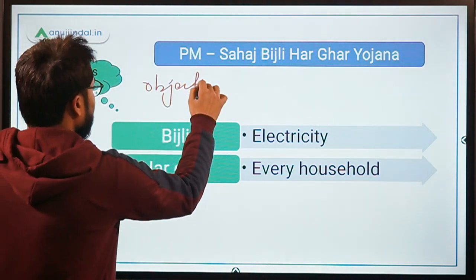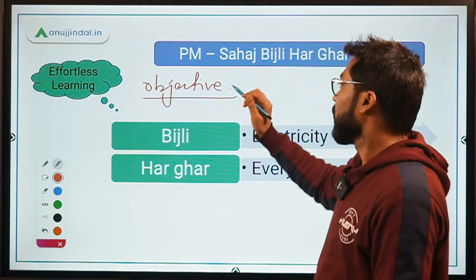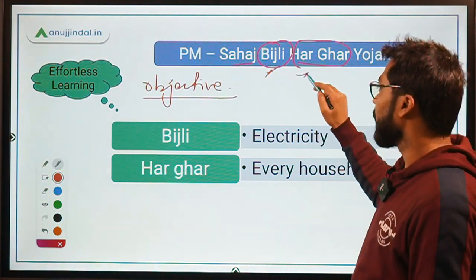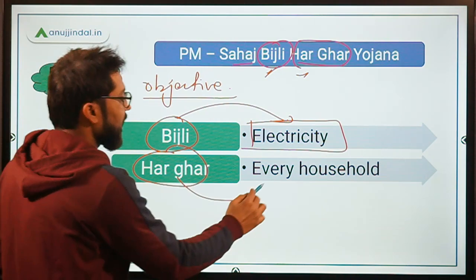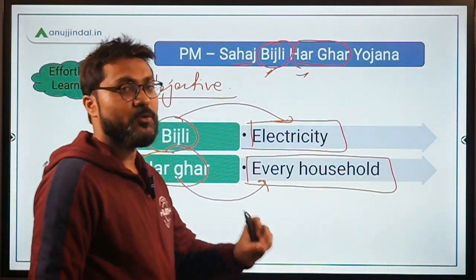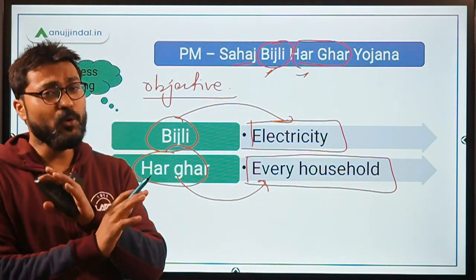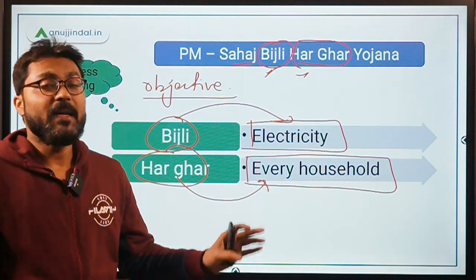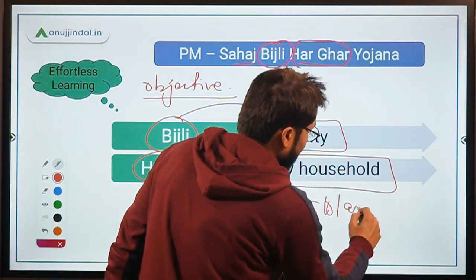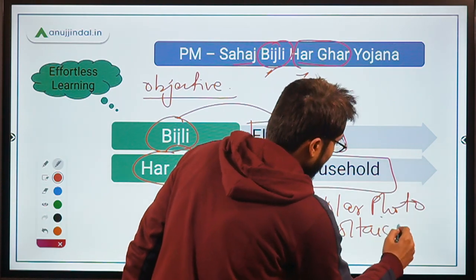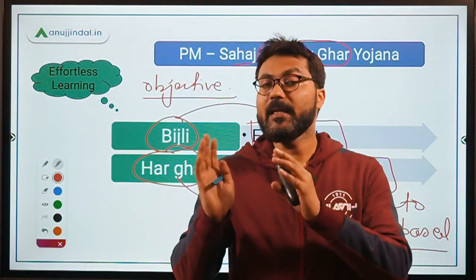Let us first talk about the objective. You can easily determine the objective from the name of the scheme. Pradhan Mantri Sahaj Bijli Har Ghar — with these words, 'bijli' means electricity and 'har ghar' means every household. So through this scheme, the government wants to provide electricity to each and every household in our country, providing last mile connectivity and electricity connection to all unelectrified households. For remote and inaccessible areas, the government is providing solar photovoltaic-based standalone plans.